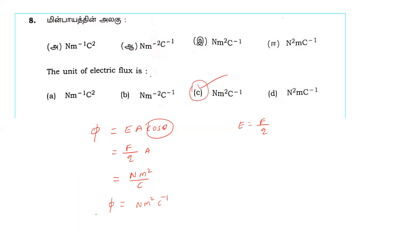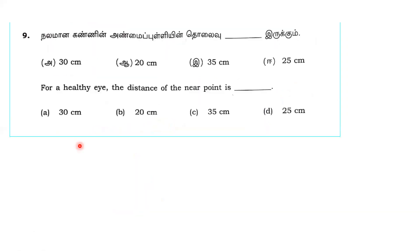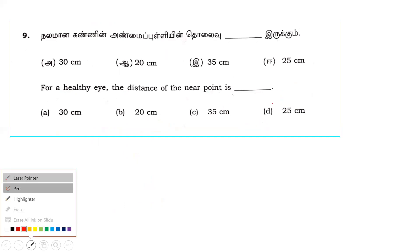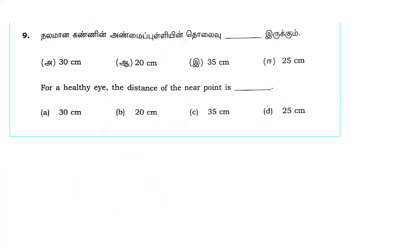Next question: the distance of the near point for a normal human being. The near point distance for a normal human eye is 25 centimeters.